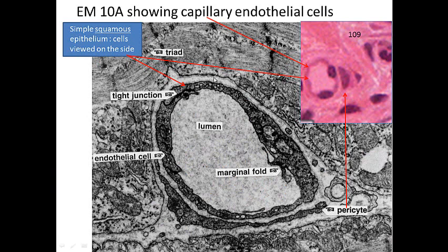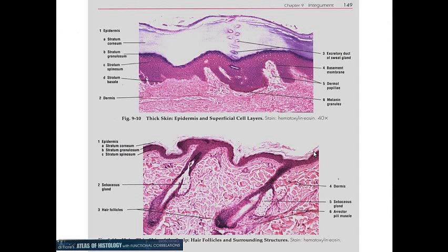At the electron microscopic level we can see endothelial cells — this is one cell and then another cell — with junctions where one cell meets another: zonula occludens, zonula adherens, and macula adherens. These are simple, flat cells. One of these actually has a little pericyte just outside the endothelial cell, located within the basal lamina of the endothelial cell.